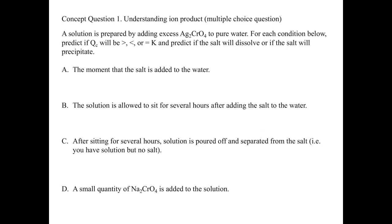The question: a solution is prepared by adding excess silver chromate to pure water. For each condition below, predict if Q will be greater than, less than, or equal to K, and predict if the salt will dissolve or precipitate. So the moment the salt is added to the water — similar to the initial condition in an ICE table — nothing has happened yet. The concentration of silver and chromate ions is zero molar. The only thing the salt can do is dissolve, so Q must be less than Ksp because we haven't dissolved anything yet. The salt will dissolve at this point.